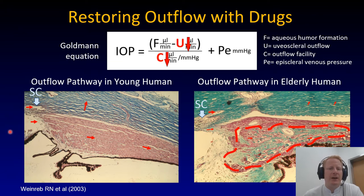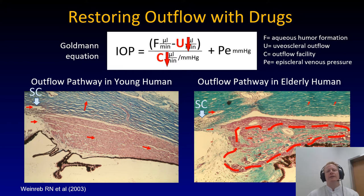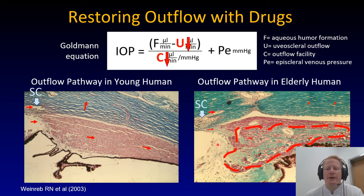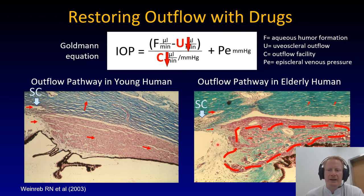This is the outflow pathway of a young human — good-looking ciliary body. This is the outflow pathway of an elderly human with a lot of extracellular matrix material, especially here in the ciliary body and elsewhere in the uveoscleral outflow pathway. This also probably isn't the most encouraging slide as far as restoring accommodation is concerned, and perhaps these two are more related than we usually like to think.